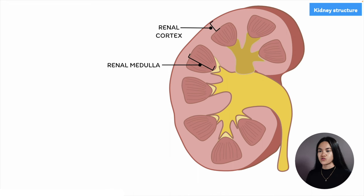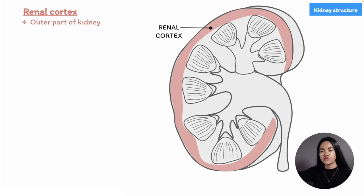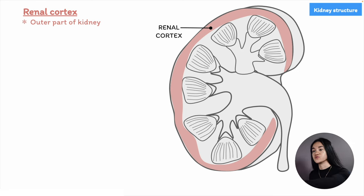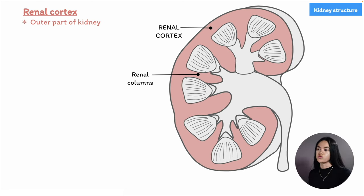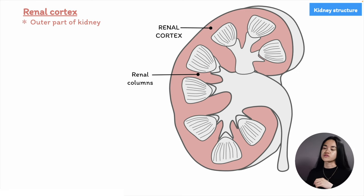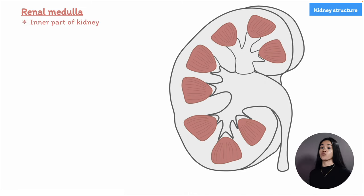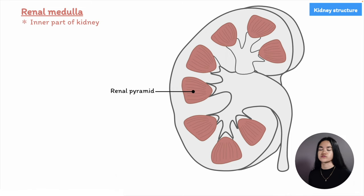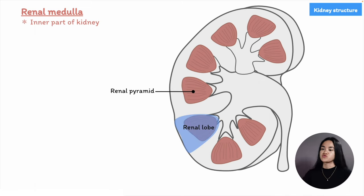We can divide the kidney into an outer region called the renal cortex and an inner region called the renal medulla. The renal cortex is the outer portion, surrounded by the renal capsule and connective tissue. The cortex extends into the medulla, and these columns between the medulla are referred to as renal columns, which extend downward from the cortex through the medulla. The renal medulla is the inner portion, composed of renal pyramids — dark, striated, triangular-shaped structures. A renal lobe is made up of a renal pyramid and the renal cortex above it.